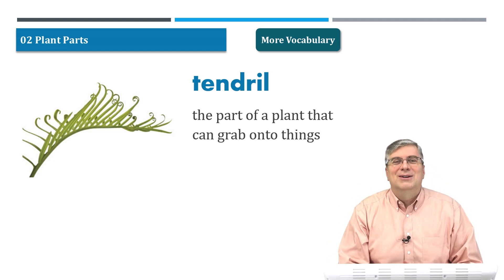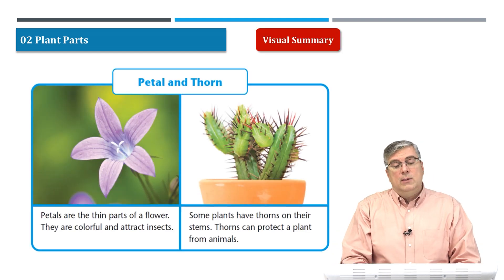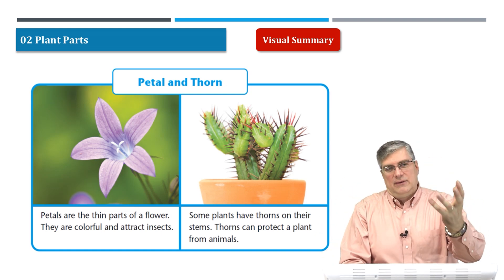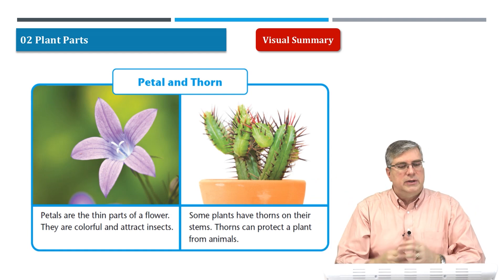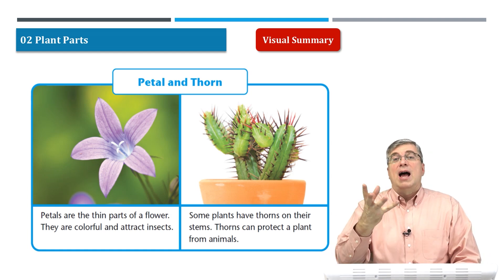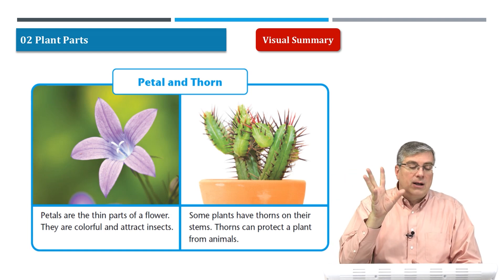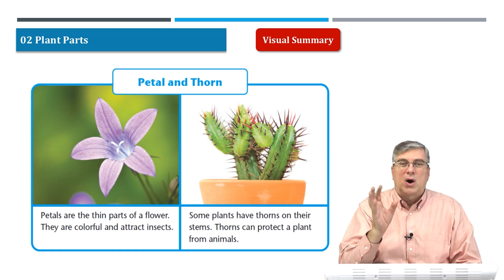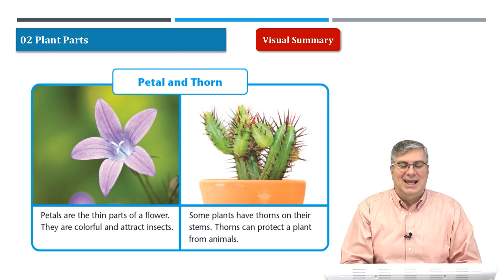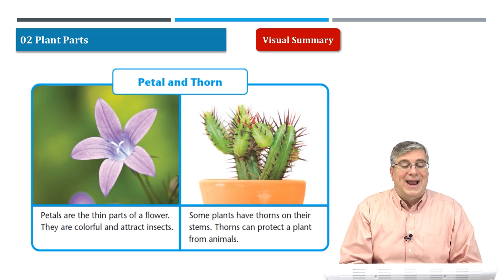Okay, that wraps up our vocabulary section. Let's move on. Now it's time to take a look at the visual summary. We can see there are different parts of plants. There are many different kinds of plants — some plants have certain parts and others have different parts. Many plants that grow in forests or where there's a lot of water will have flowers and petals. Our picture shows petal and thorn. Petals are the thin, colorful parts of a flower that attract insects.